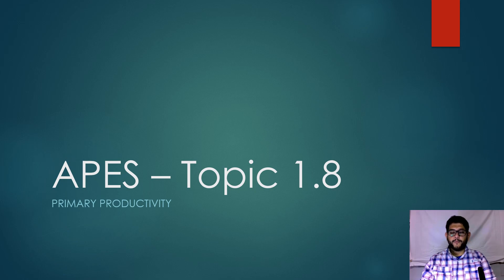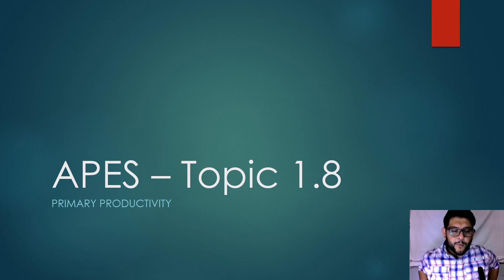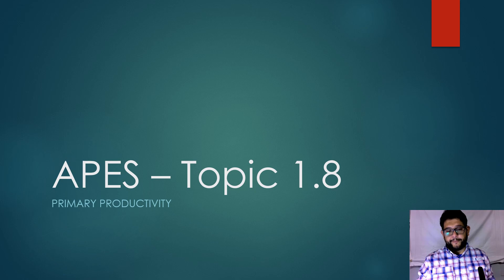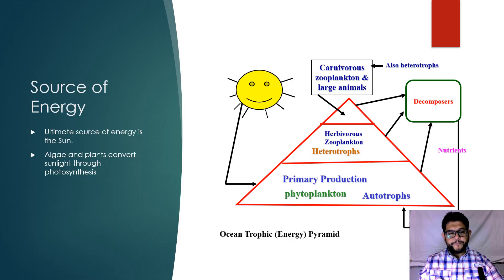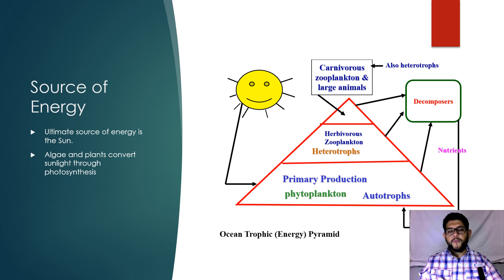Hey guys, this is Mr. V and welcome to Abe's review video topic 1.8. This is primary productivity. This is a diagram that I like to use quite a bit — an ocean trophic energy pyramid. We'll review it and refer to it in several videos to come.